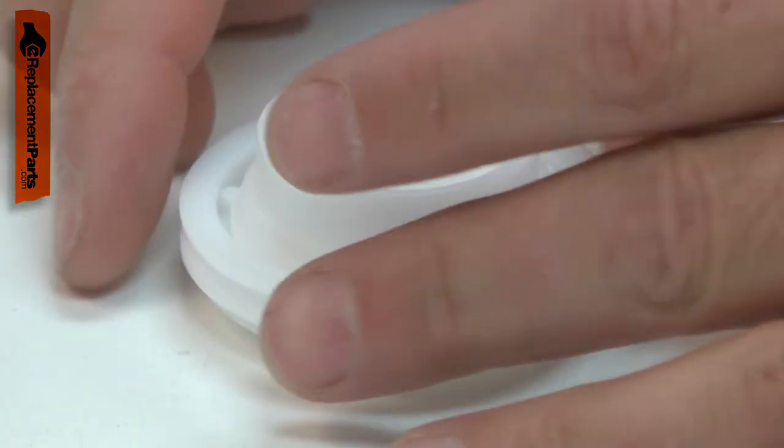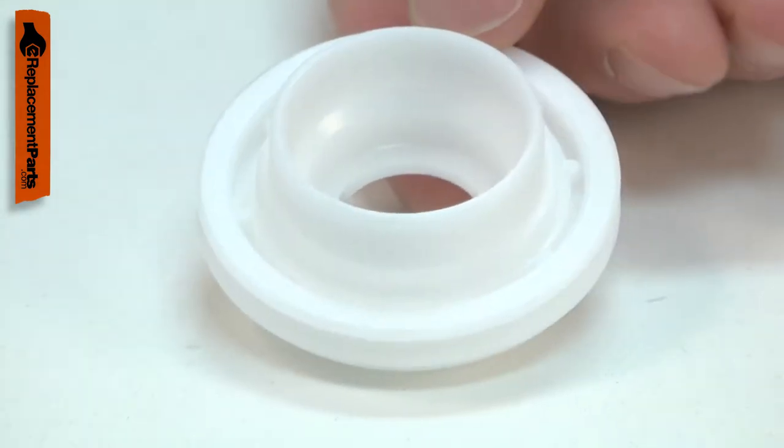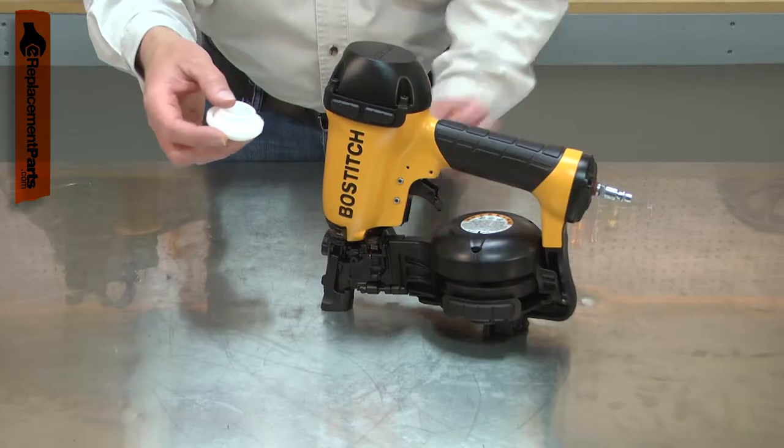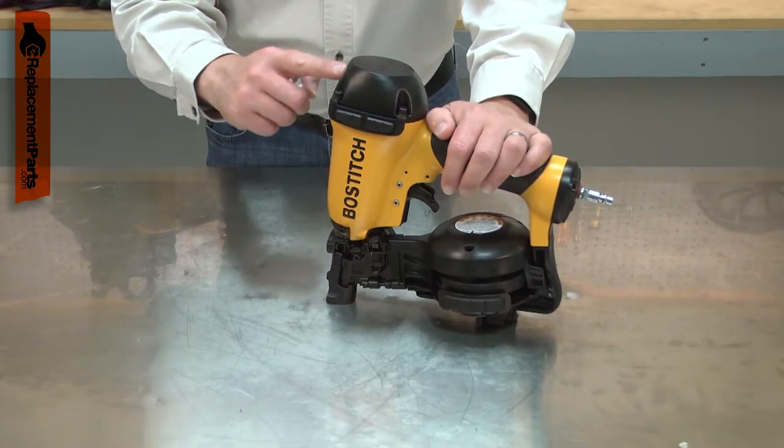Over time, the seals on the head valve can harden and crack. The valve body itself can also crack. When this happens, you will usually have air leaking from the gun's exhaust.